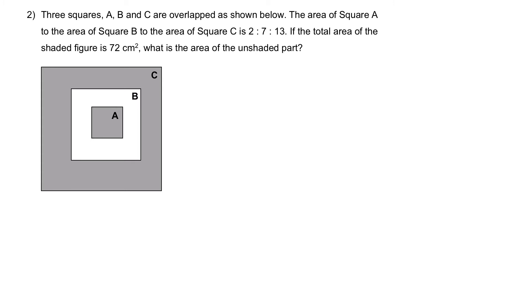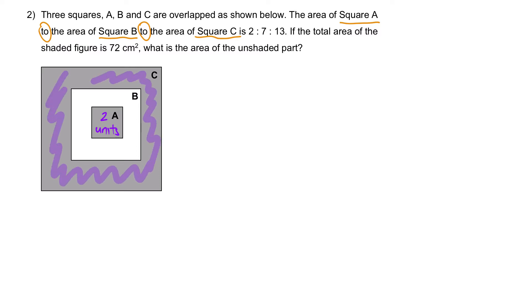For the 3 squares, the area of square A to square B to square C is 2 is to 7 is to 13. Which means square A is 2 units, square B is 7 units, and the biggest square C is 13 units. The shaded area consists of the 2 units from A and also the outer part of C.